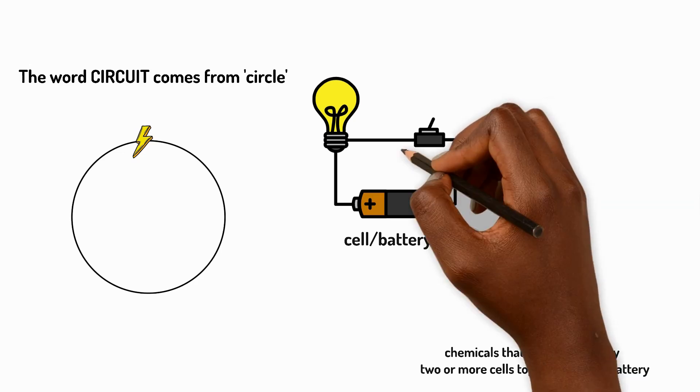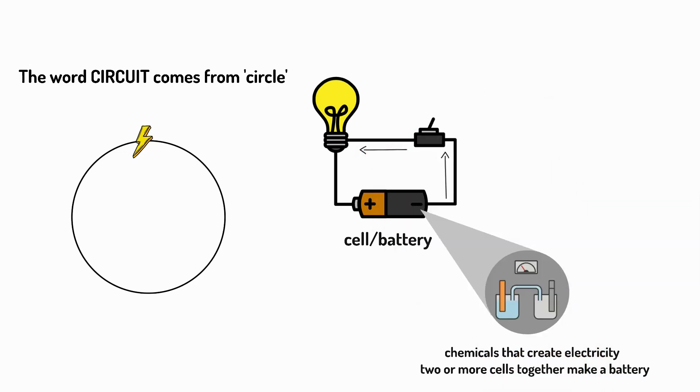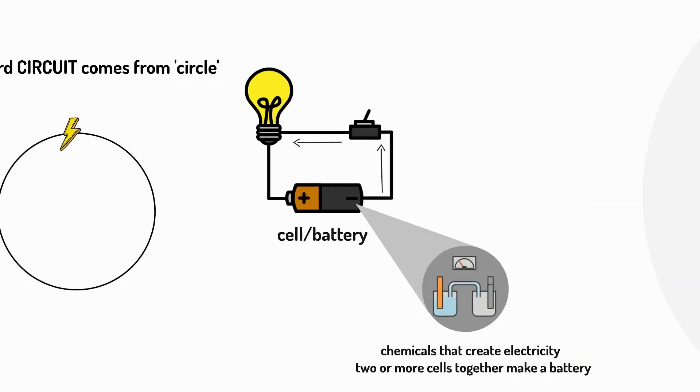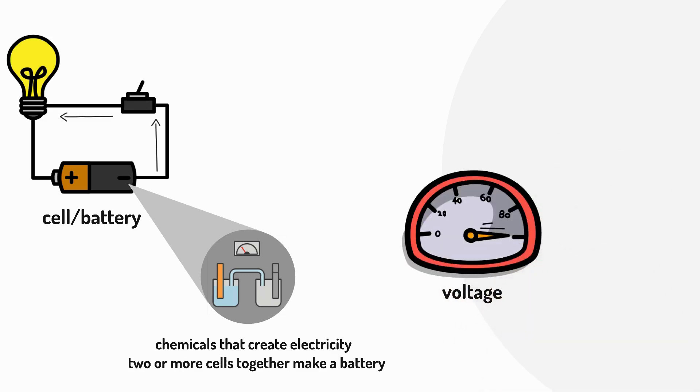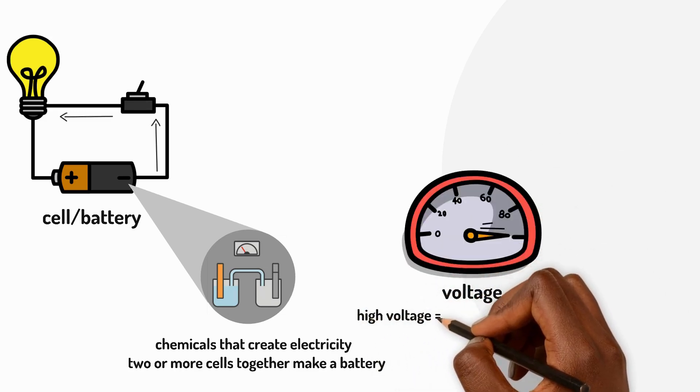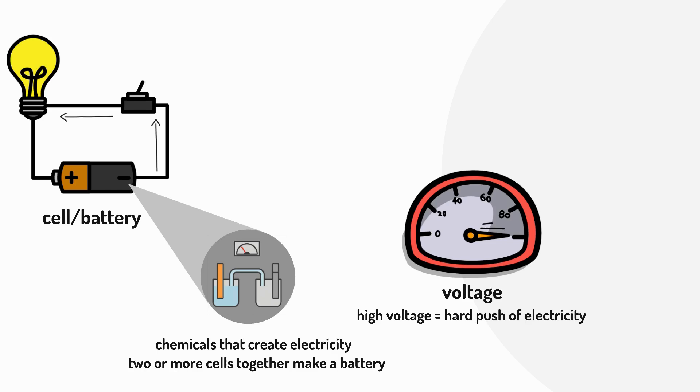The battery pushes electricity around a circuit. A battery's pushing power is called voltage. The higher the voltage the harder it pushes electricity around the circuit. It's like the strength of water pressure in a hose.